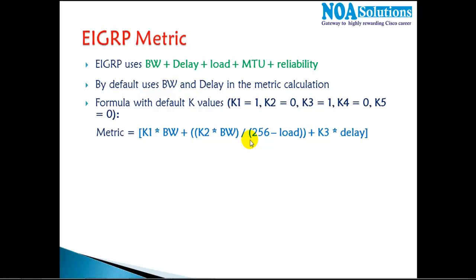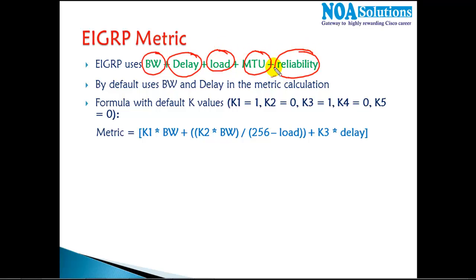In the case of EIGRP, it's not like that. EIGRP calculates the best route based on five factors: bandwidth, delay, load, MTU, and reliability. These are the five factors used to decide the best route. Let's understand their default values, starting with bandwidth.